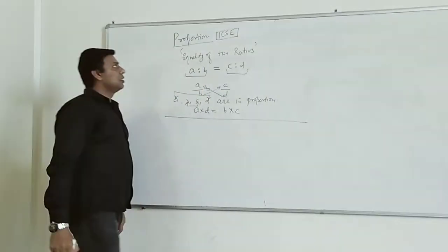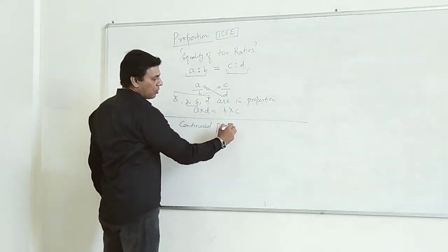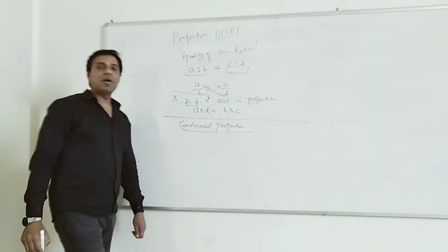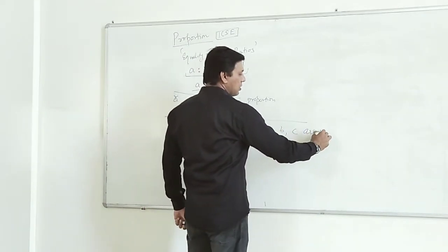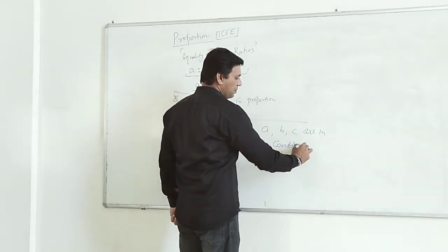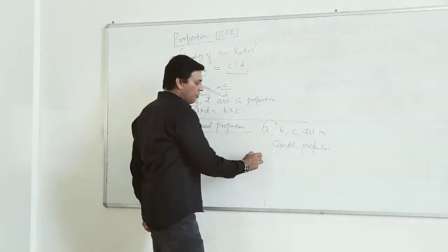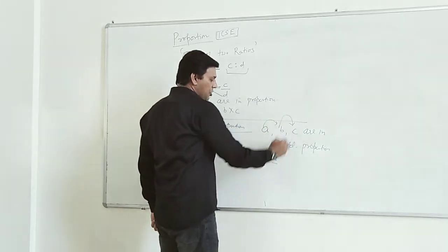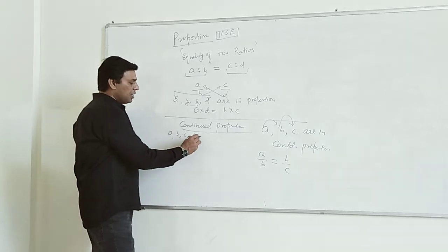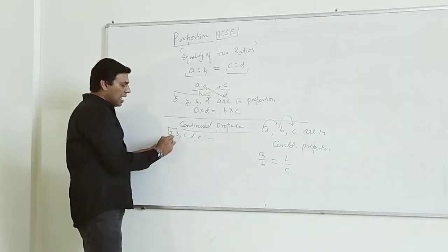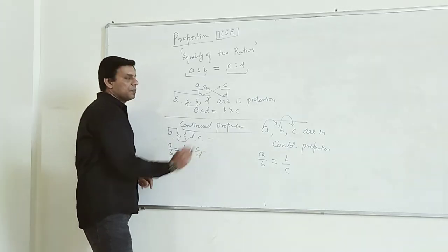Now what is continued proportion? Suppose we have three numbers A, B, C in continued proportion. Then ratio of A and B will equal to ratio of B and C. We can generalize it with more numbers: ratio of A upon B is equal to ratio of B upon C is equal to ratio of C upon D, and so on. This is called continued proportion.